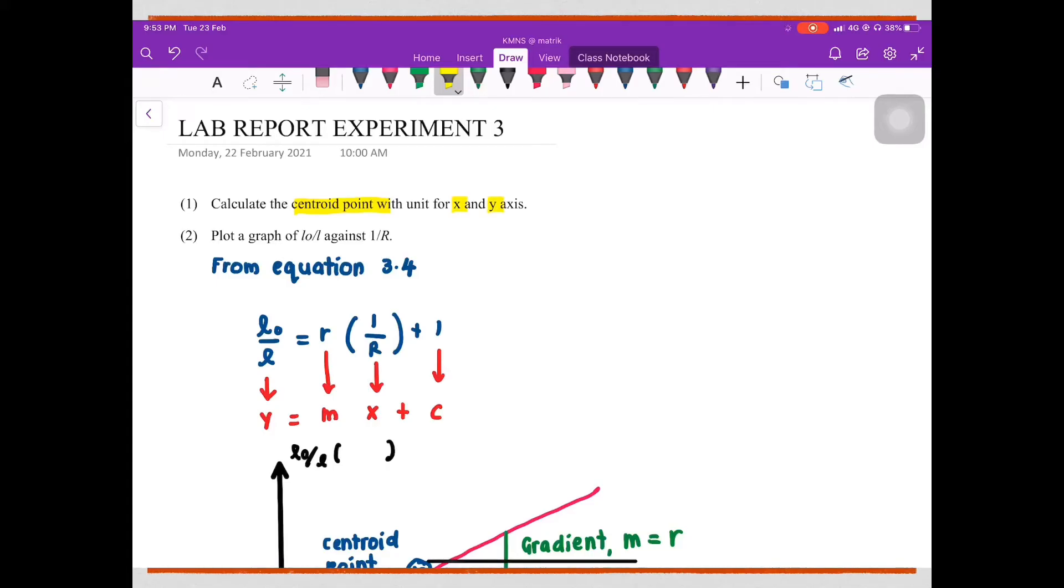After that, we need to plot a graph of L0 over L against 1 over R, where R is resistance.